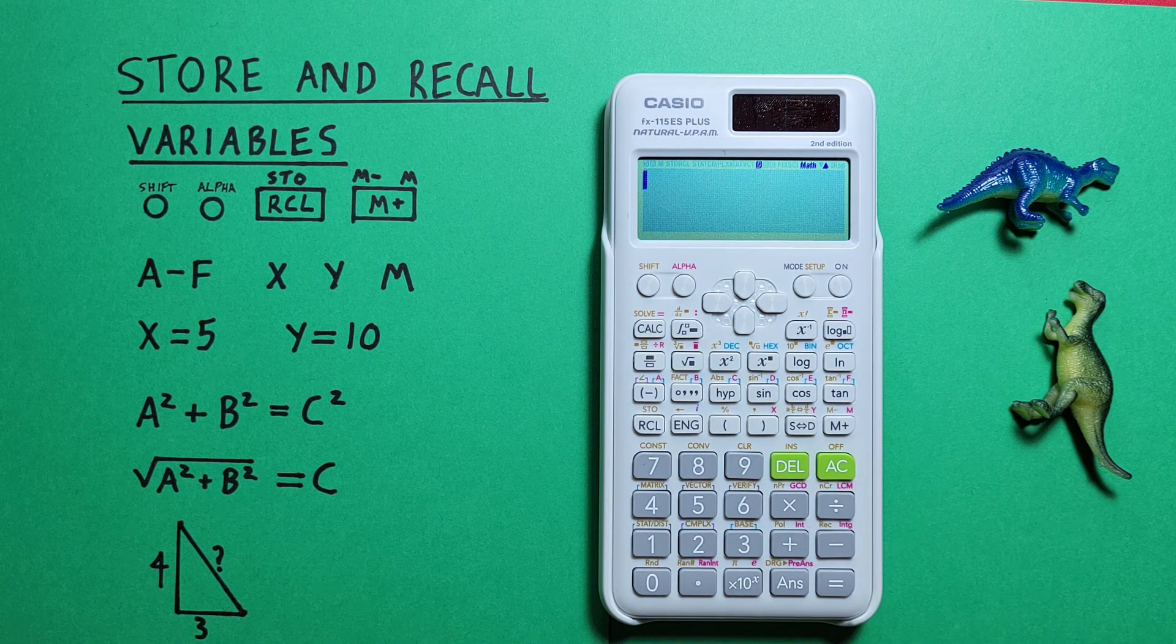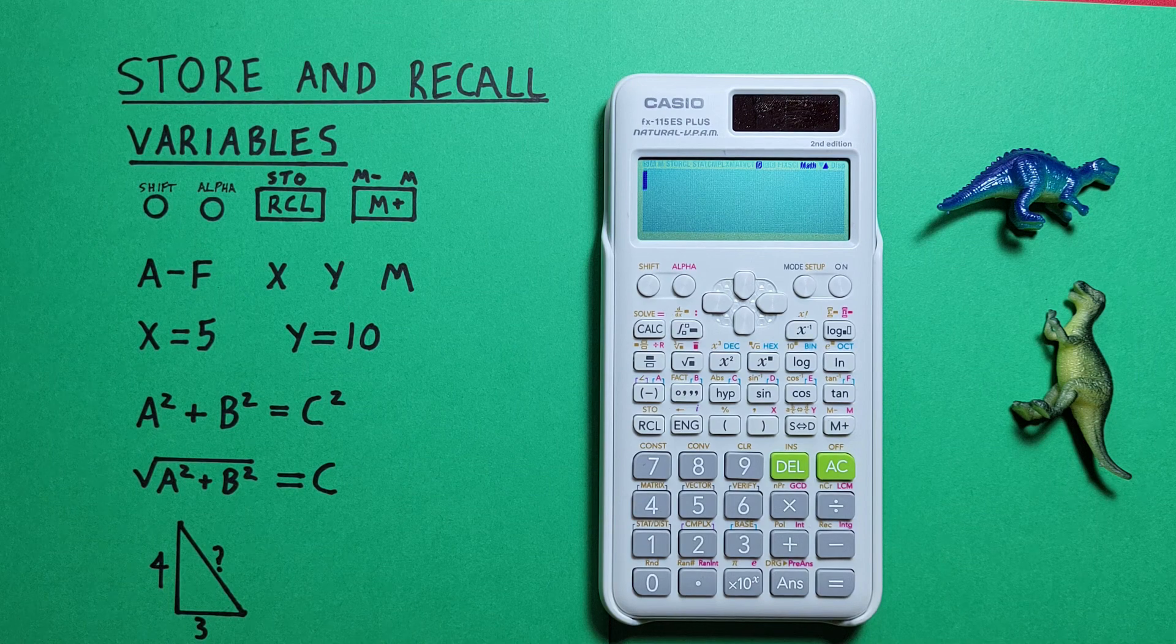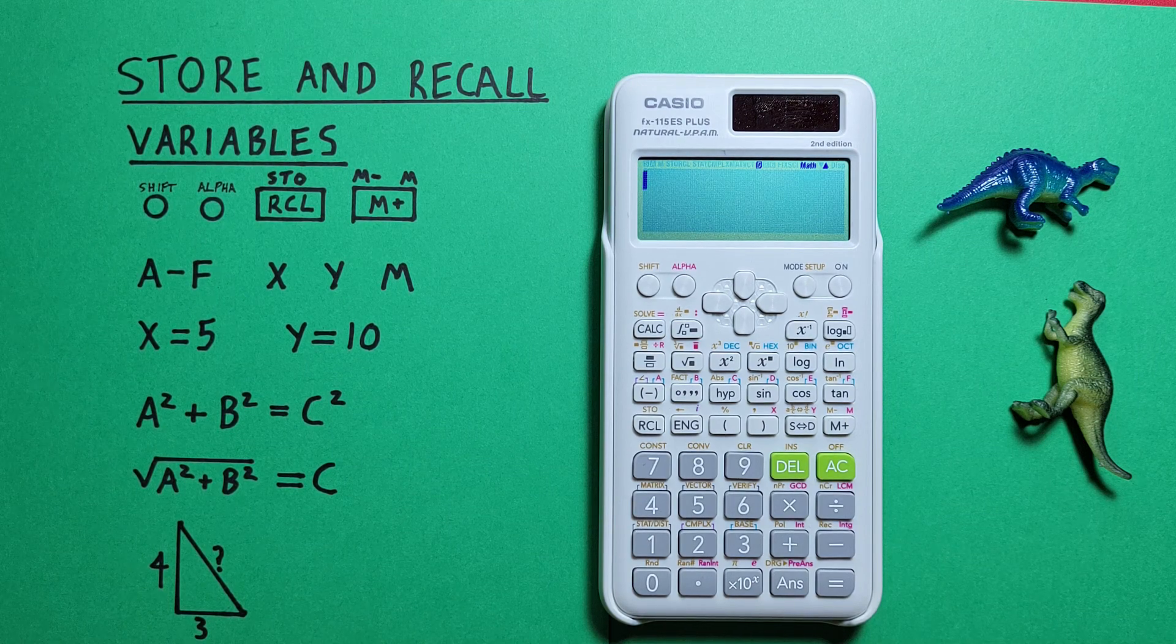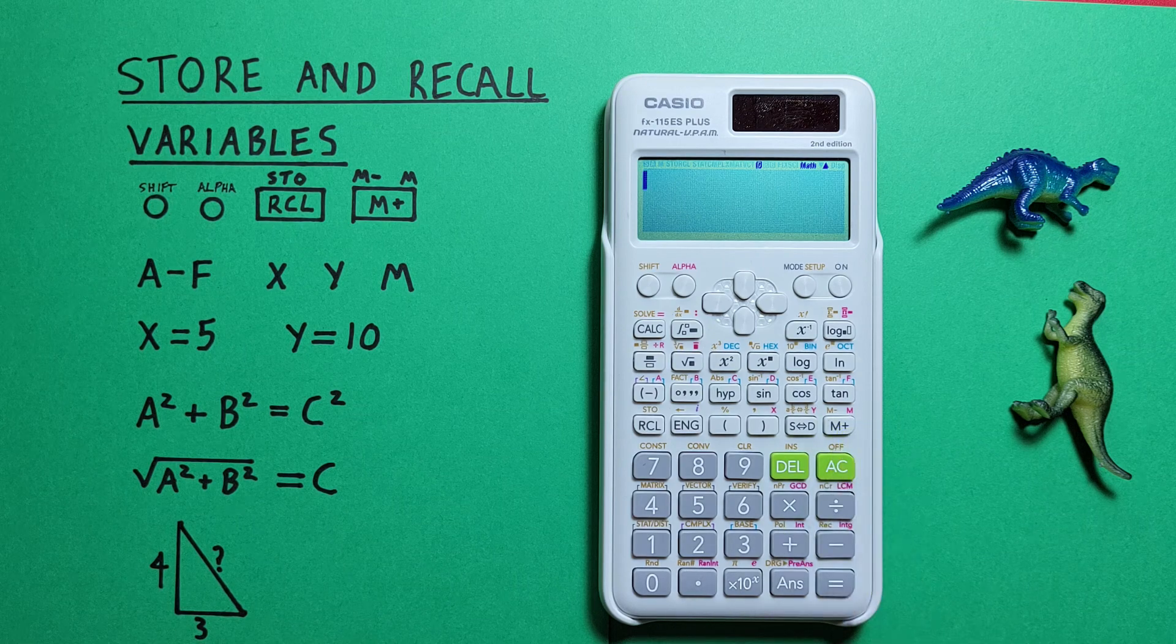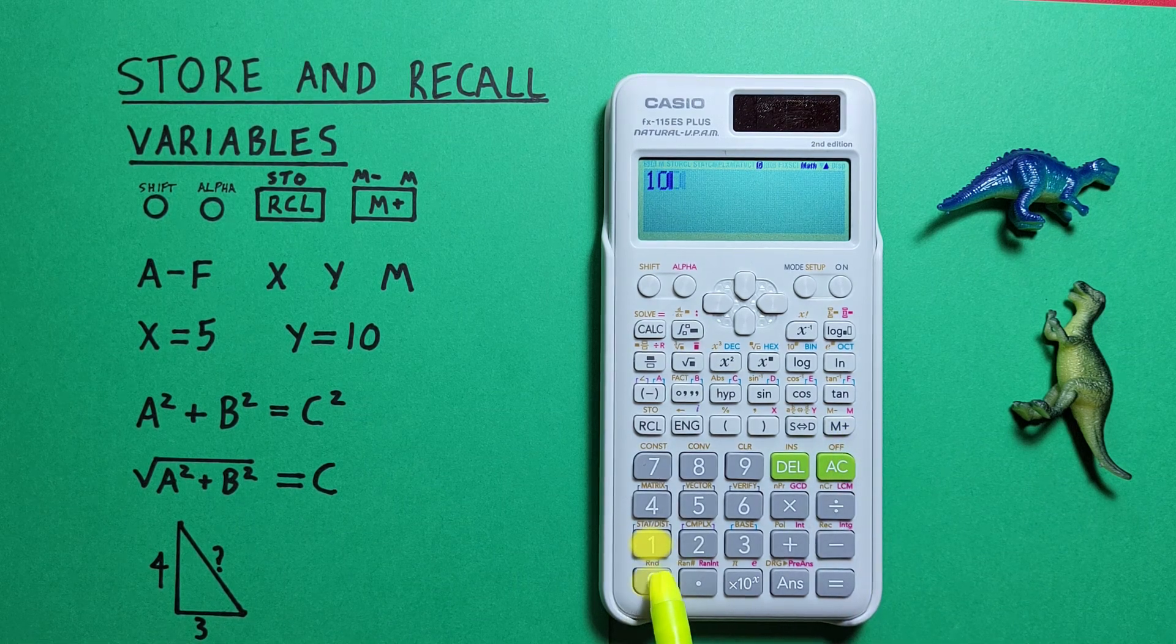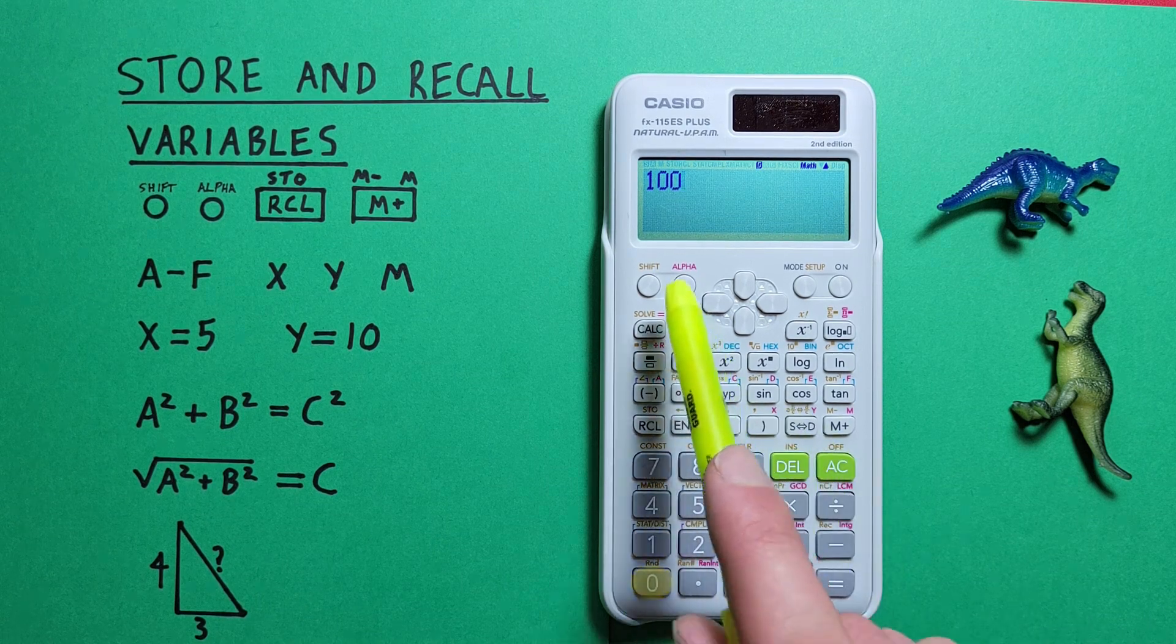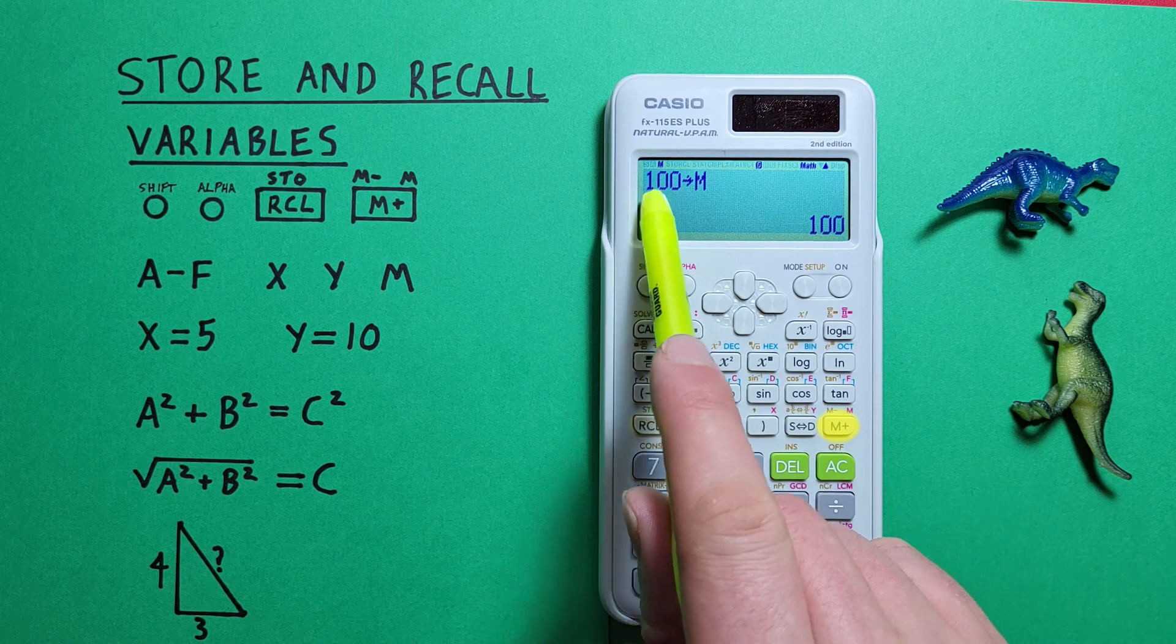This calculator also has an independent memory slot or the m slot. What's interesting about this is we can add and subtract to it with the m plus or m minus function. So let's say we store 100 into our m. So we can press shift, store, m. There we go, 100 into m.